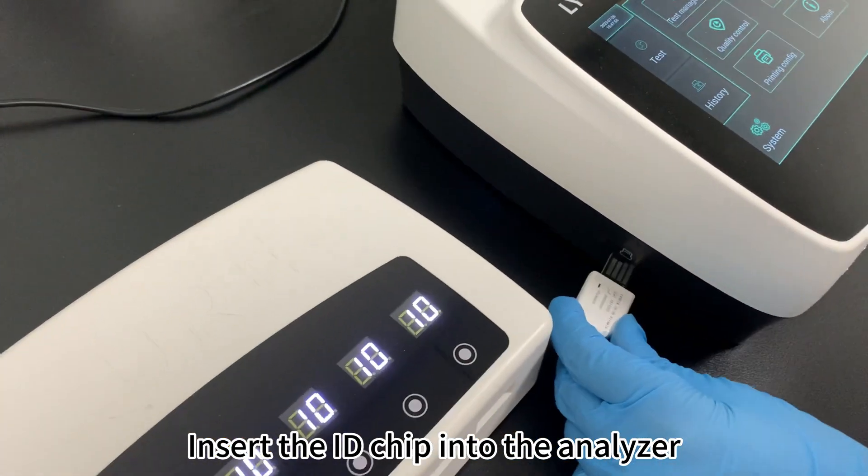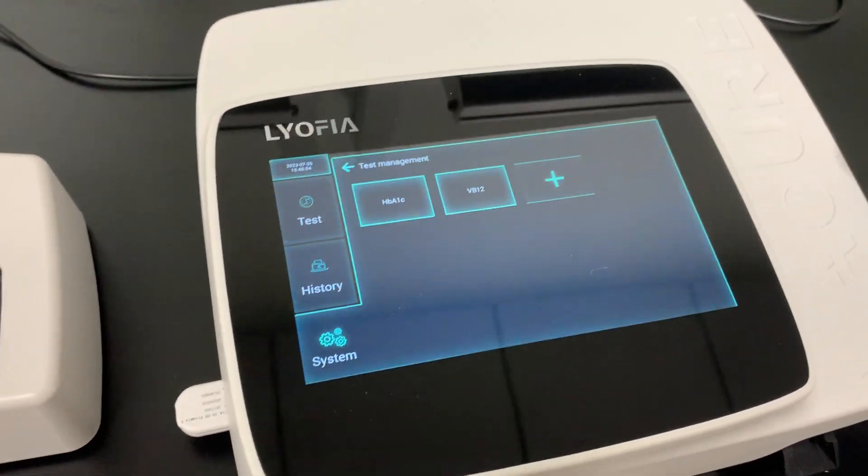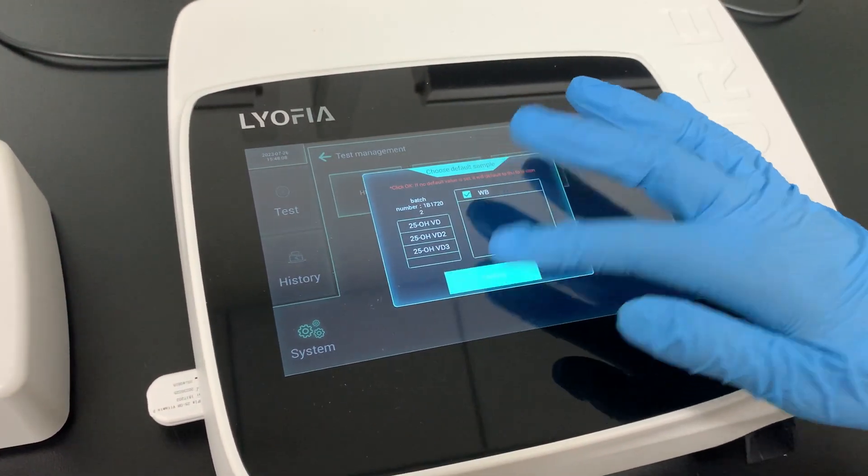Insert the ID chip into the analyzer. Select Test Management, click Plus, select Sample Type, and click Confirm.